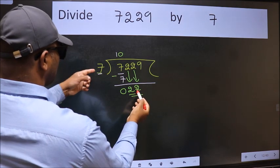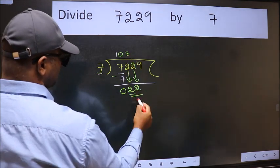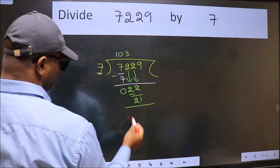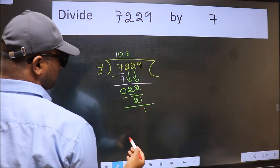A number close to 22 in the 7 table is 7 threes, 21. Now we subtract. We get 1.